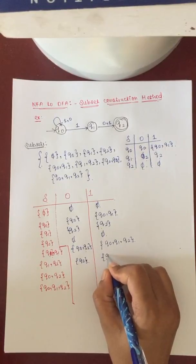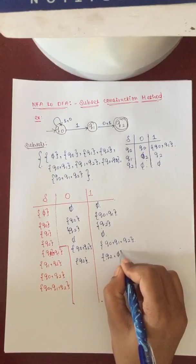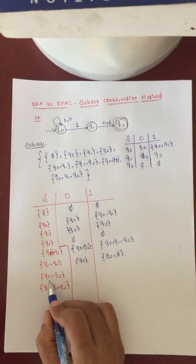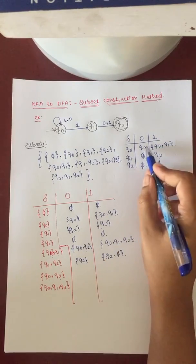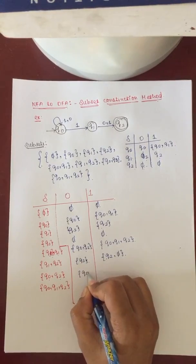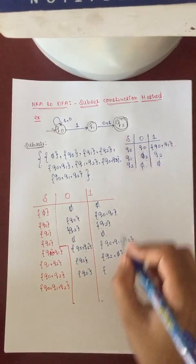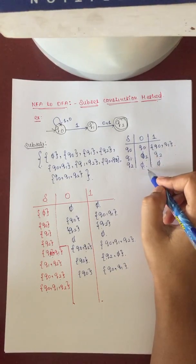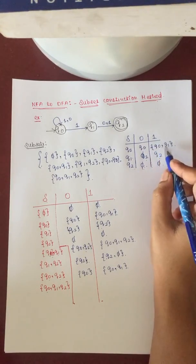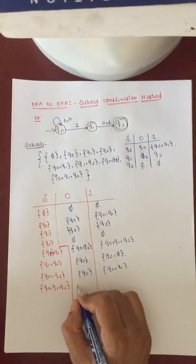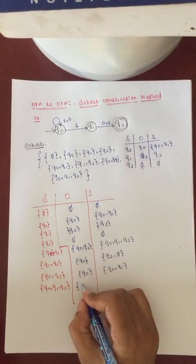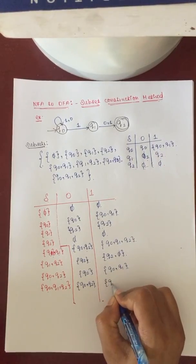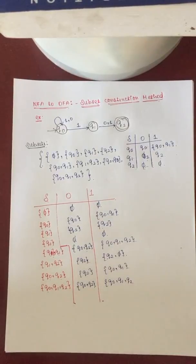For subset {Q1, Q2}: Q1 with 1 goes to Q2 and Q2 with 1 goes nowhere, so the result is Q2 only. Q1 with 0 goes to Q2 and Q2 with 0 is null, so only Q2 here. For subset {Q0, Q2}: combining Q0 and Q2 under 0 gives only Q0; combining under 1 gives {Q0, Q1}. For subset {Q0, Q1, Q2}: combining all three under 0 gives {Q0, Q2}, and combining under 1 gives {Q0, Q1, Q2}.